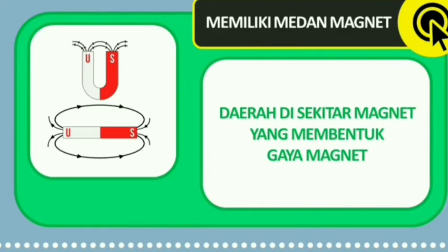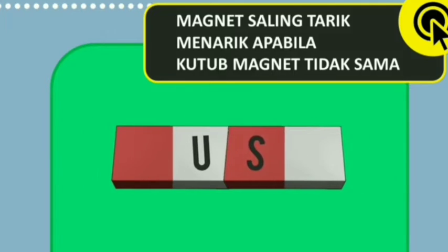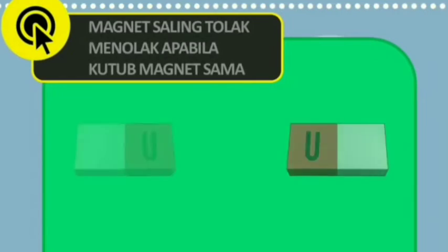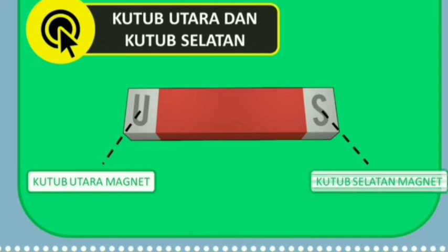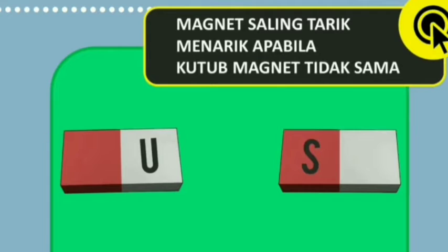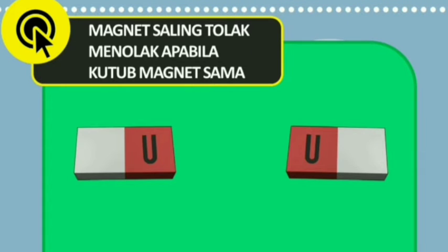Magnet memiliki medan magnet, yaitu daerah di sekitar magnet yang membentuk gaya magnet. Magnet terbagi menjadi dua kutub, yaitu kutub utara dan kutub selatan. Magnet saling tarik menarik apabila kutub magnet berbeda, dan magnet saling tolak menolak apabila kutub magnet sama.